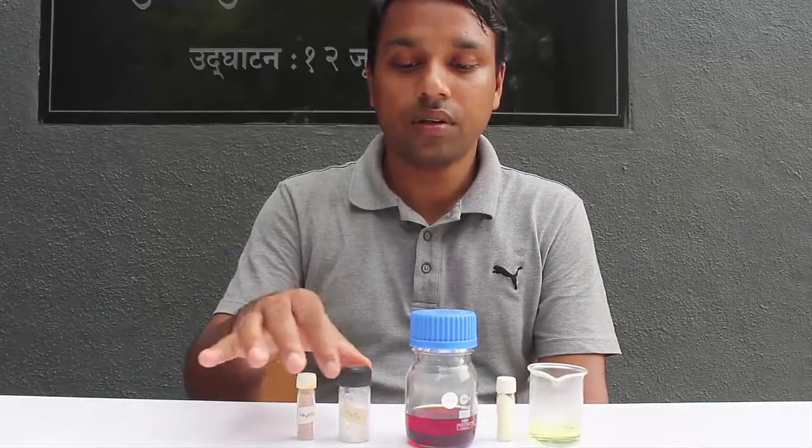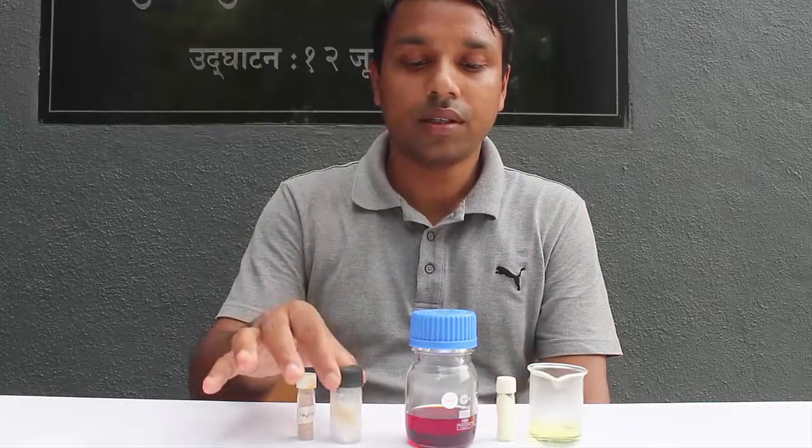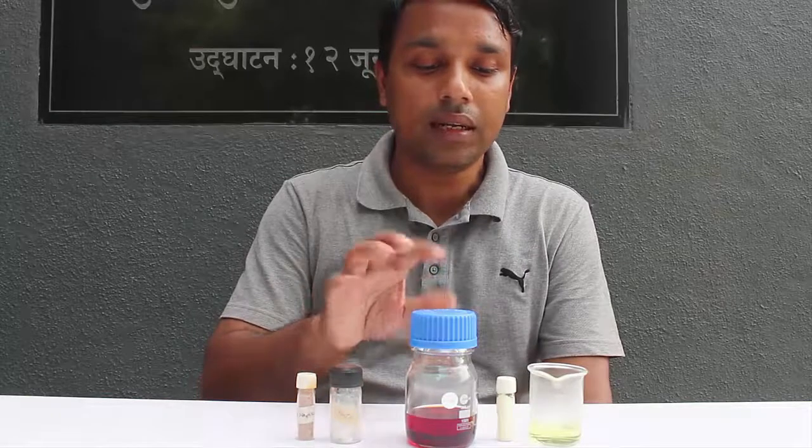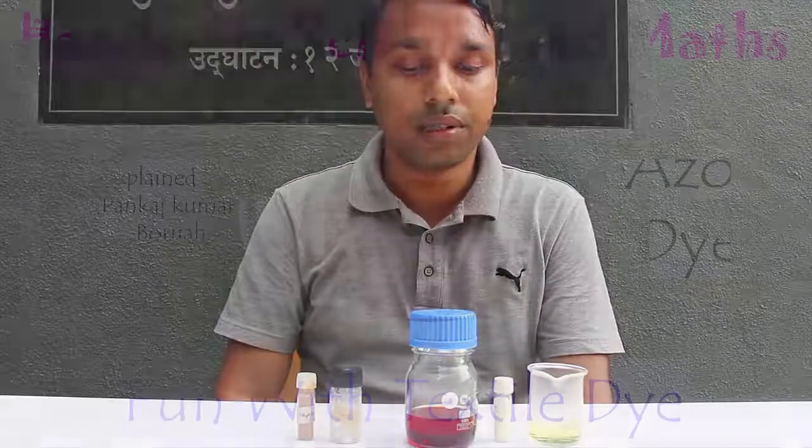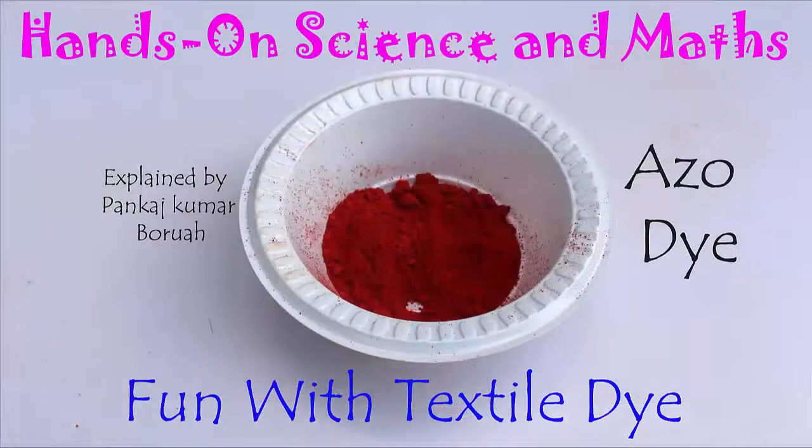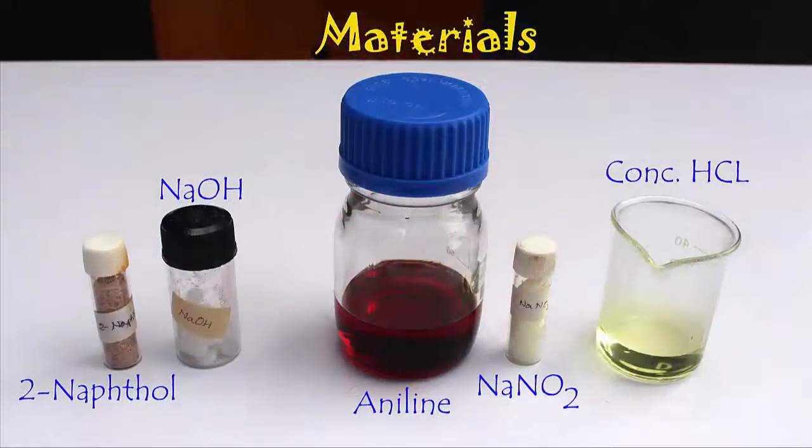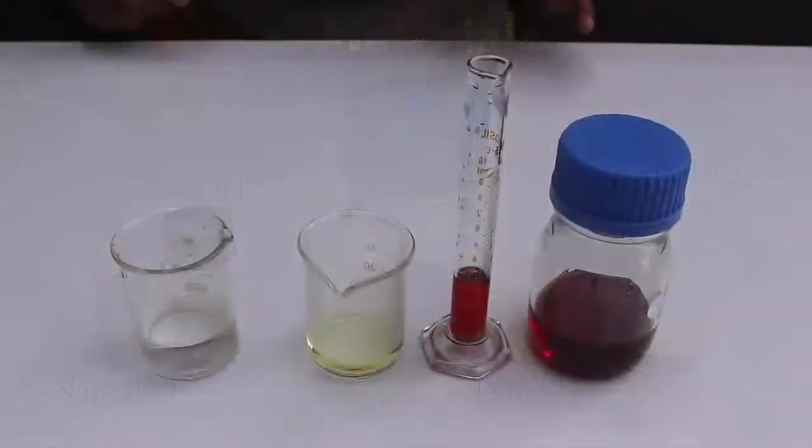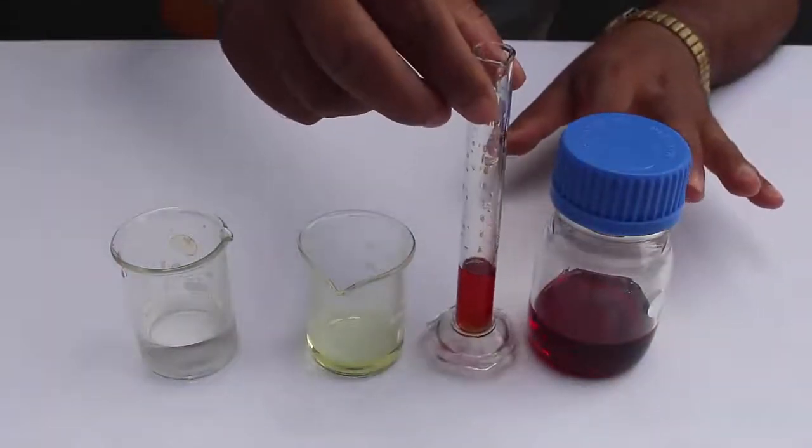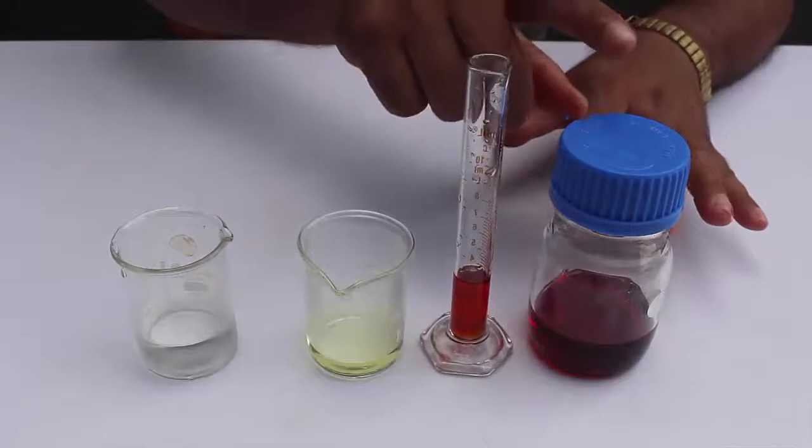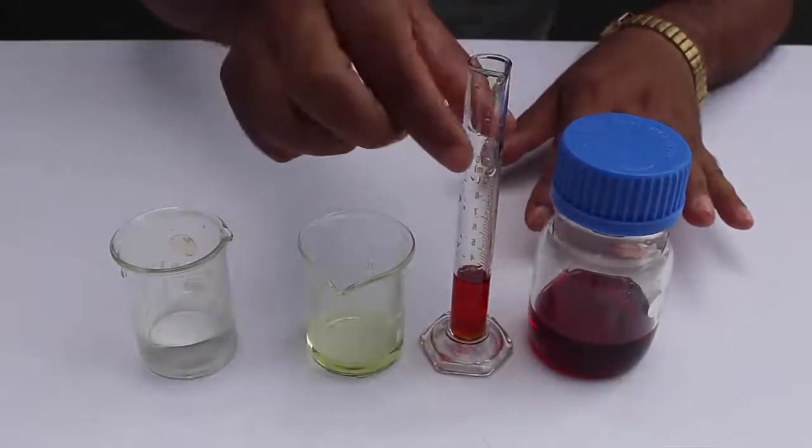We need some chemicals: 2-naphthol or beta naphthol, sodium hydroxide caustic soda, aniline, sodium nitrate, and also concentrated hydrochloric acid. So this is how we make the azo dye. First, pour out 4 ml of aniline in a measuring cylinder.